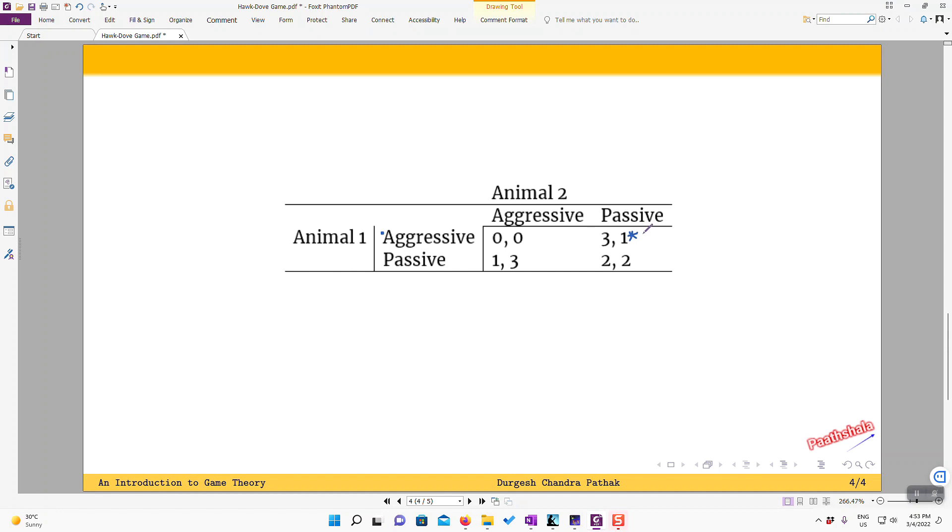So it is better for animal two to be passive when animal one is aggressive. Similarly, when animal one is choosing to be passive, what is the best animal two can do? If it remains aggressive, it gets three. If it remains passive, it gets two. So it is better for the animal two to be aggressive when animal one is passive.